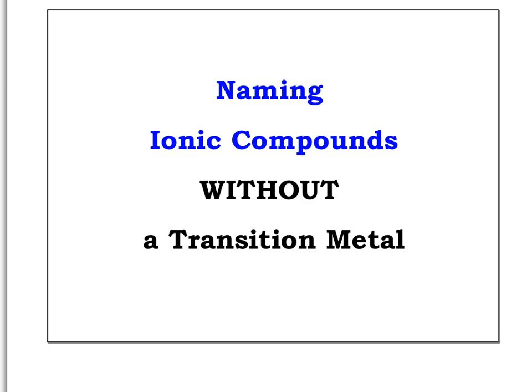Hi guys, Ms. Raymond here. Today we're going to talk about naming ionic compounds — specifically ones that do not contain a transition metal. These are ones that contain only alkali metals, alkaline earth metals, or aluminum.